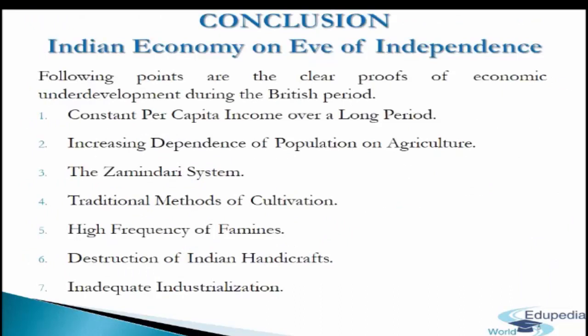By the time India won its independence in 1947, the impact of 200 years of British colonial rule was already showing on all aspects of the Indian economy. The following points are clear proofs of economic underdevelopment during the British period: constant per capita income over a long period, increasing dependence of population on agriculture, the zamindari system, traditional methods of cultivation, high frequency of famines, destruction of Indian handicrafts, and inadequate industrialization. The hostile policy of British government led to the complete ruin of Indian economy.